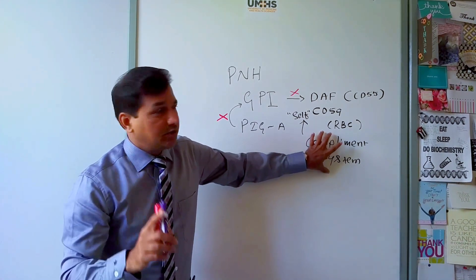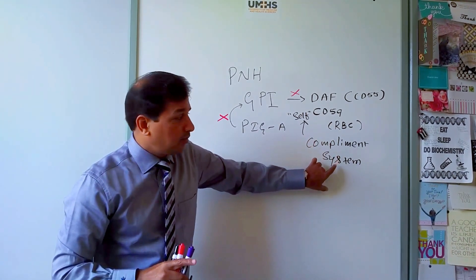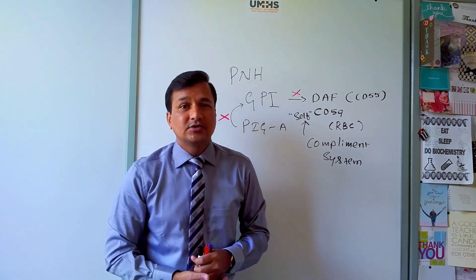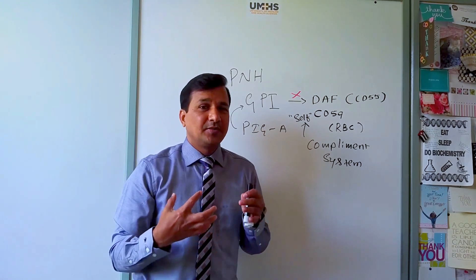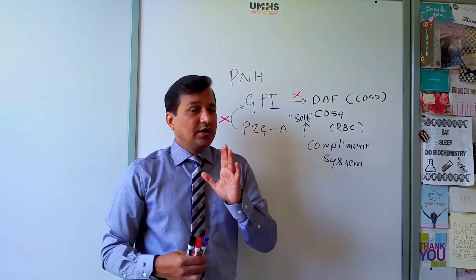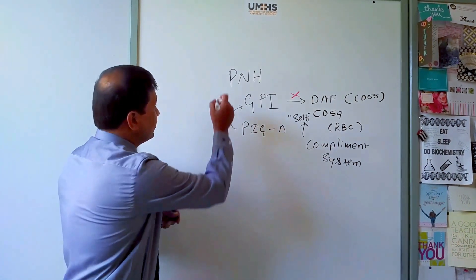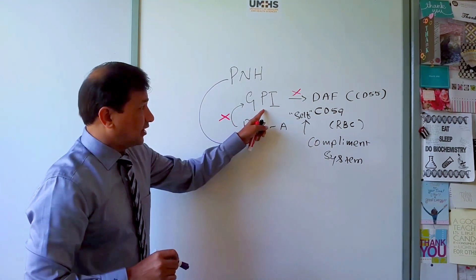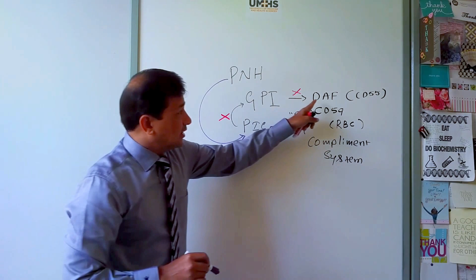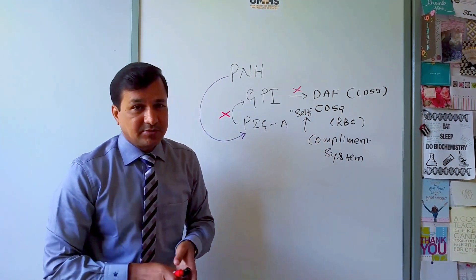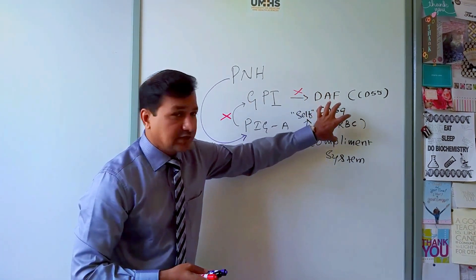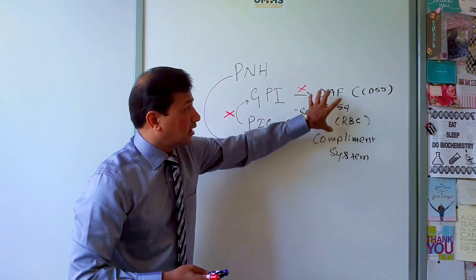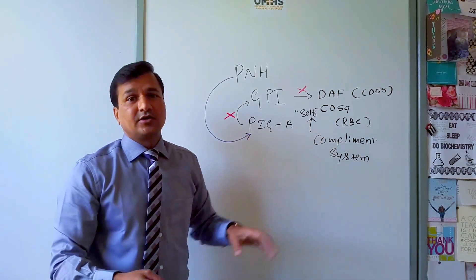Whenever red blood cells do not carry DAF and CD59 on their membrane, the complement system recognizes them as non-self and lyses them, leading to hemolysis. This is the basic principle of PNH: due to mutation in PIG-A, defective GPI is made, DAF and CD59 are absent from red blood cells, and complements destroy them.